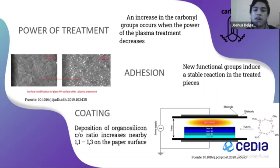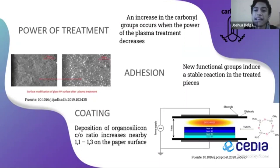Regarding the power of treatment, the power changes properties. In the Xiu Chuan work, an increase in C=O groups occurs when the power of the plasma treatment decreases. This growth of functional groups containing oxygen is reflected in the surface properties of the substrate. This plasma treatment increases the polar components on the surface, and the C/O ratio decreases, improving hydrophilicity and biocompatibility for adhesion.